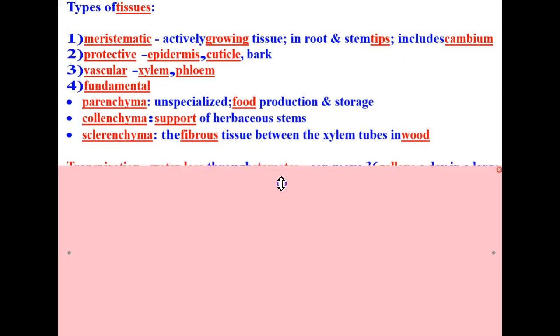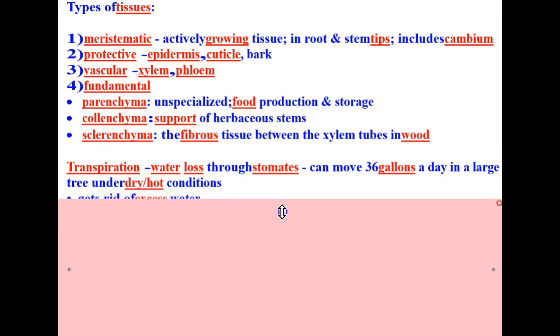Next let's talk about the process of transpiration. We learned about transpiration earlier this year when we talked about the water cycle. Transpiration is the water lost through the stomates of plants.